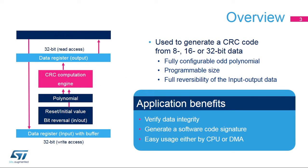CRC stands for Cyclic Redundancy Check. The CRC calculation unit is used to generate a CRC code on 8, 16, or 32 bits of data using a configurable polynomial value and size. The CRC-based techniques can be used to verify data transmission or storage integrity. The CRC calculation can also be used to compute the signature of the application software during run time, to be compared with a reference signature generated at link time and stored at a given memory location.